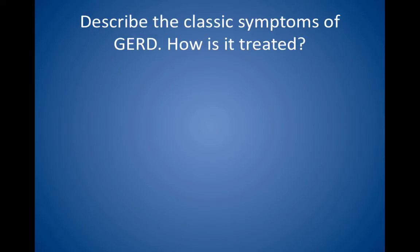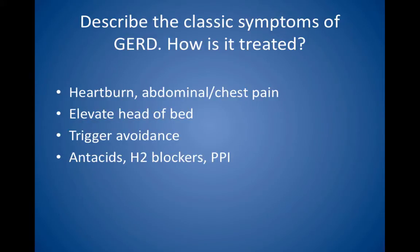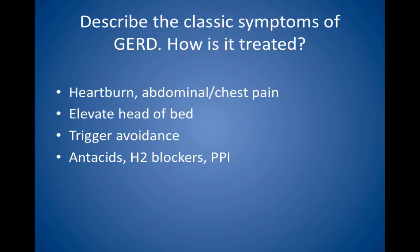Describe the classic symptoms of GERD. How is it treated? The main complaint is usually heartburn, often related to eating and lying supine. GERD may also cause abdominal or chest pain. The initial treatment is to elevate the head of the bed and to avoid coffee, alcohol, tobacco, spicy and fatty foods, chocolate, and medications with anticholinergic properties. If this approach fails, antacids, histamine 2 blockers or H2 blockers, and proton pump inhibitors may be tried. Many patients have already tried over-the-counter remedies, and many physicians begin empiric treatment at the first visit because lifestyle modifications usually fail. Surgery in the form of a Nissen fundoplication is reserved for severe or resistant cases.